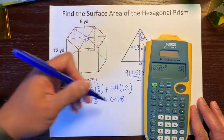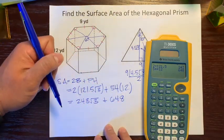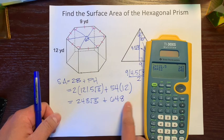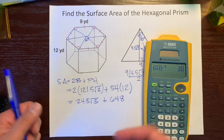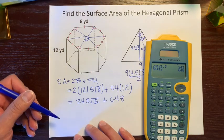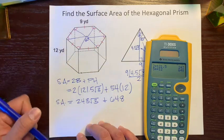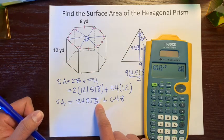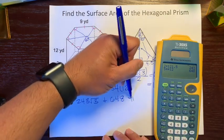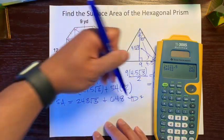You might be tempted to combine these two terms, but this term has a radical and this one doesn't, so we can't combine them. This is our final answer: the surface area of this hexagonal prism is 243√3 + 648 square yards.